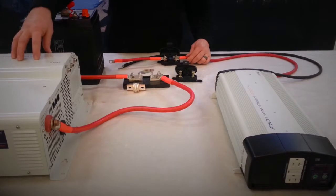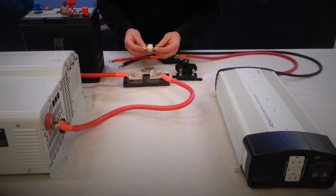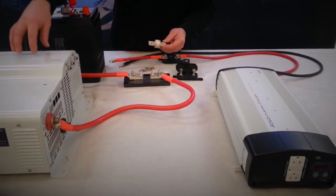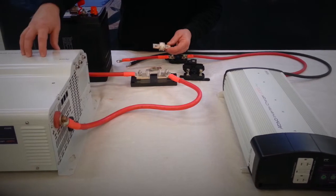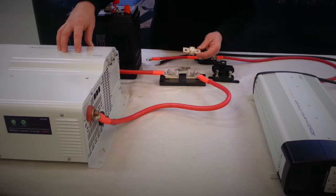The transformer based, we're going to use what we call a class T fuse. And basically what it is, it is a slow blow fuse. It's going to allow at 12 volts at 6000 watts to draw up to 600 amps for five seconds or more.